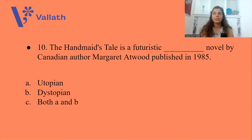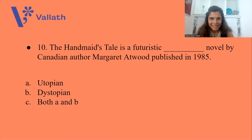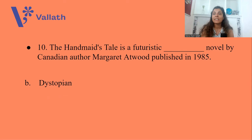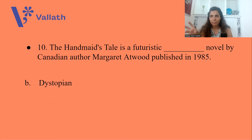Question number ten: The Handmaid's Tale is a futuristic novel by Canadian author Margaret Atwood, published in 1985. Is it A. a Utopian novel, B. a Dystopian novel, or C. Both utopian and dystopian? The answer is option B, Dystopian novel. I have covered The Handmaid's Tale summary — not in the Canadian literature series, but in my postcolonial literature series. Please go check out that summary on our channel.